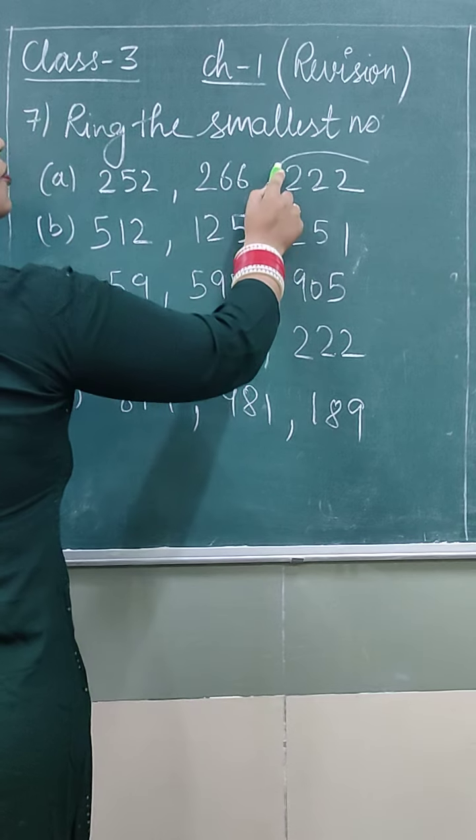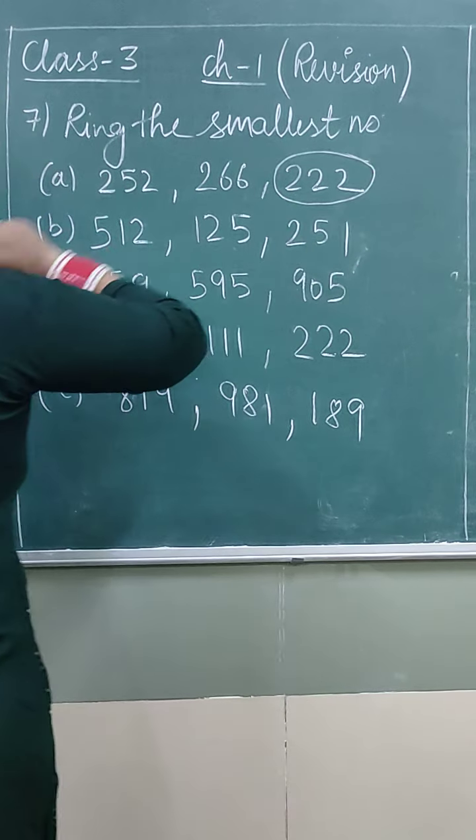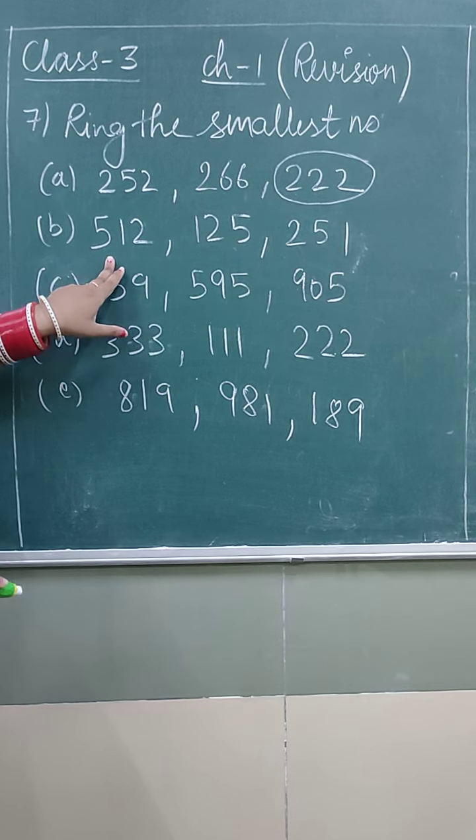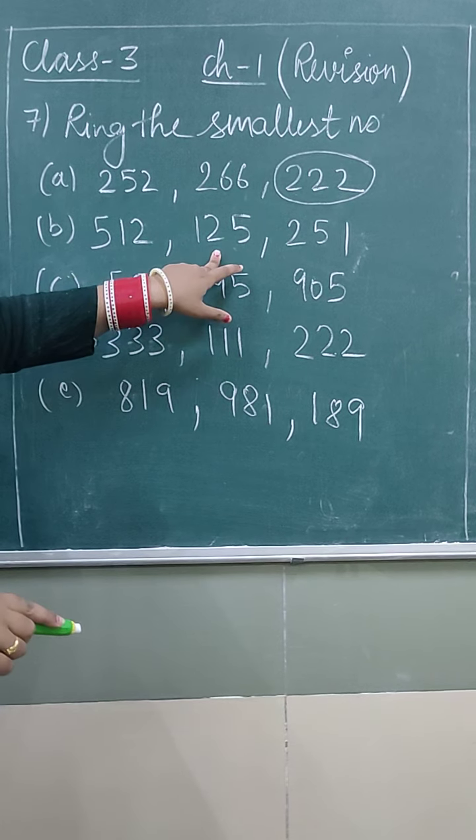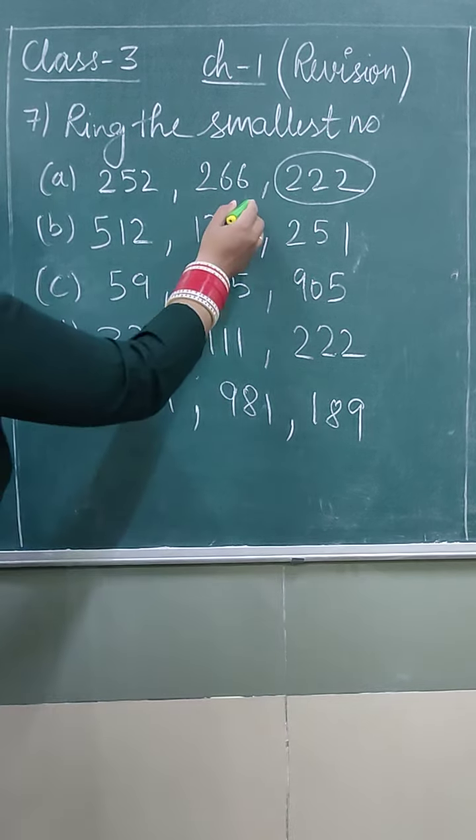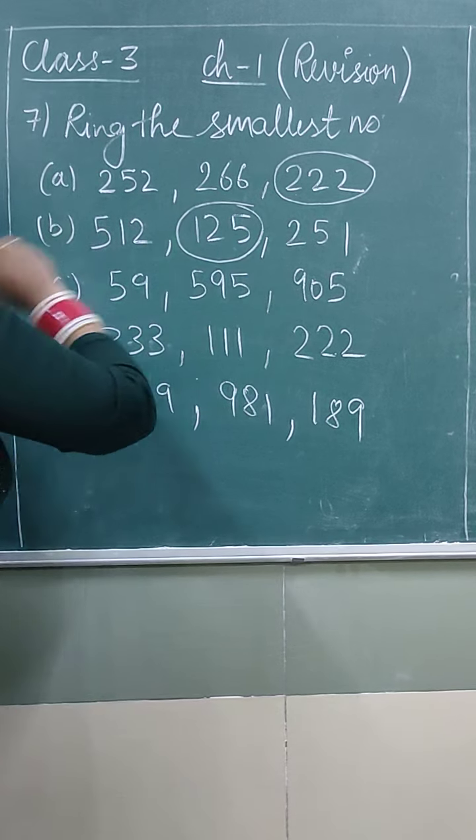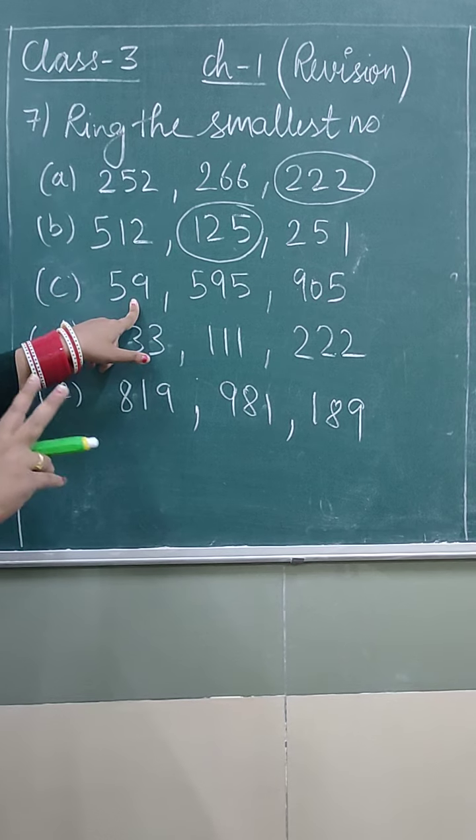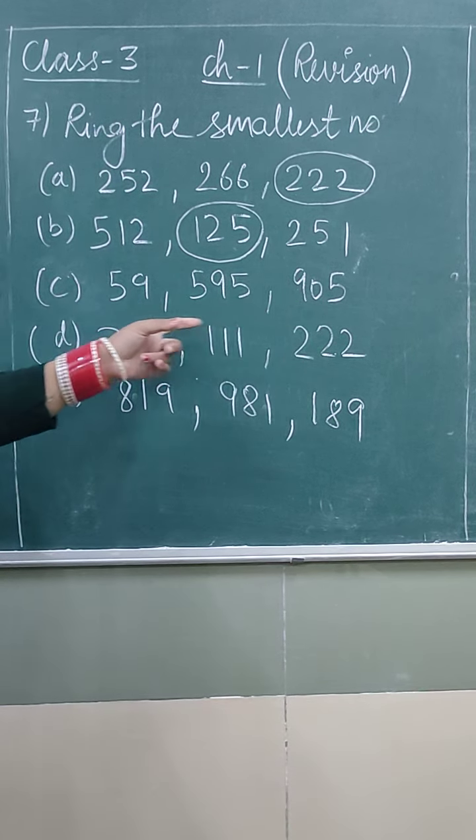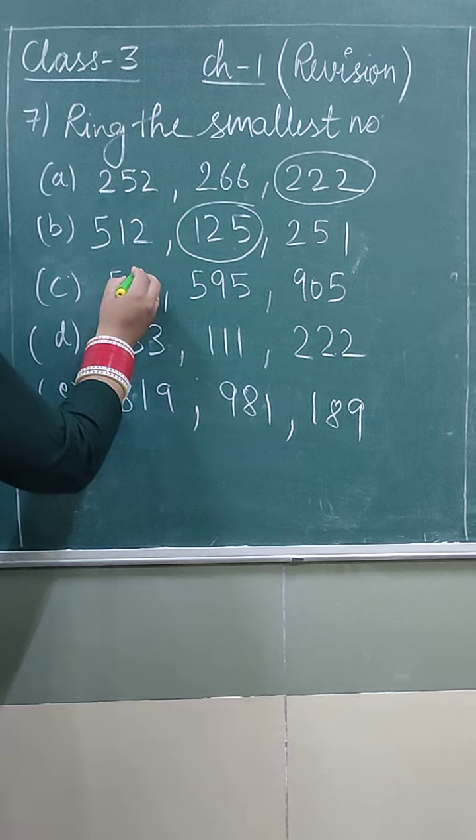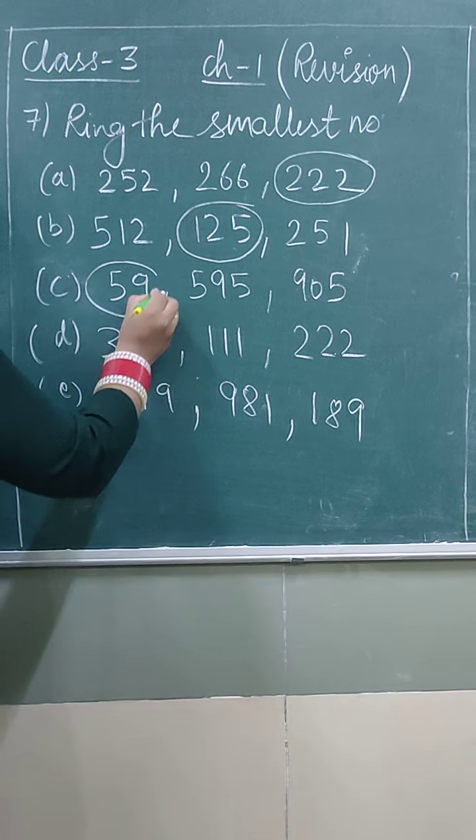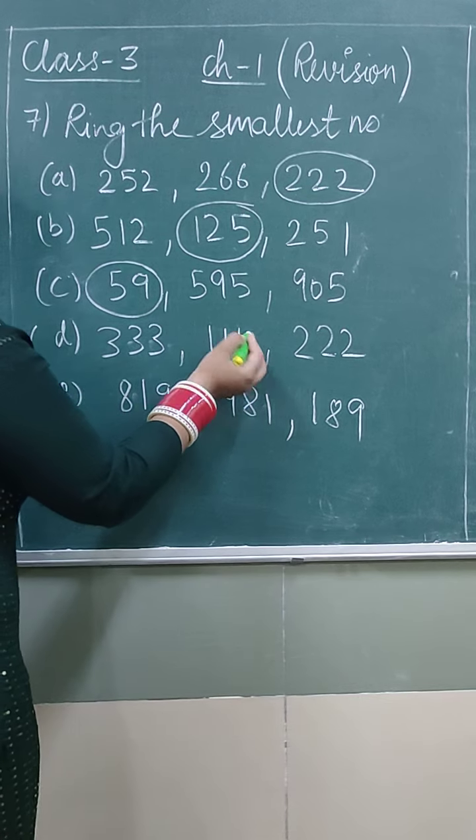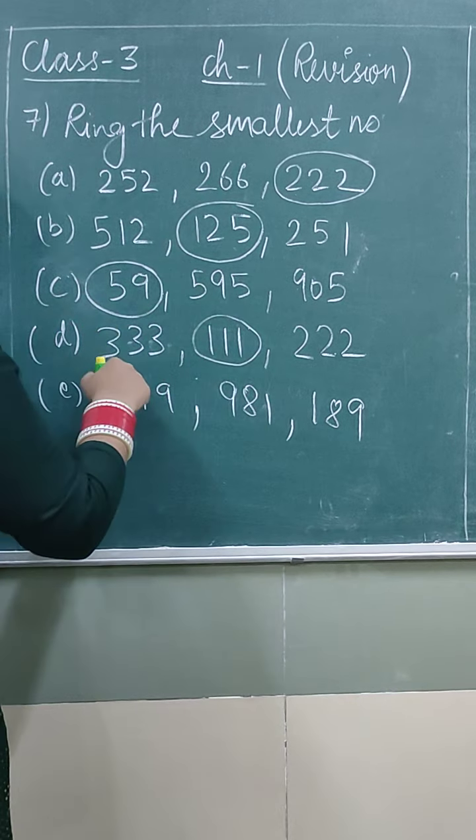In A part we have 252, 266, 222. This is the smallest one, 222. Next we also compare 512, 125, 251. Here this is a 2 digit number and these are 3 digit numbers, and we all know 3 digit numbers are bigger and 2 digit numbers are smaller.